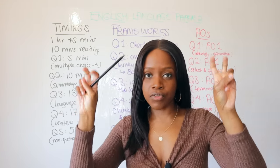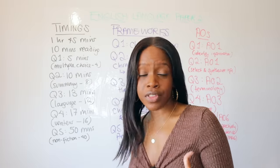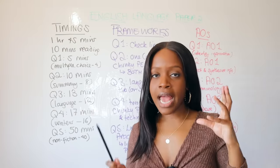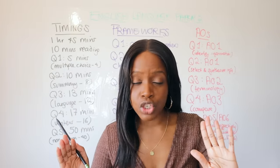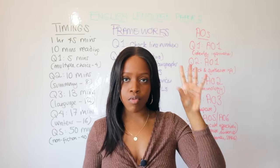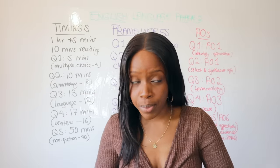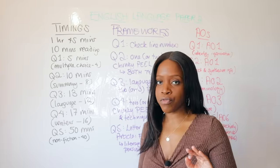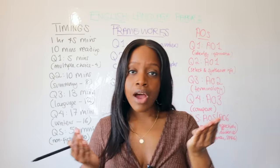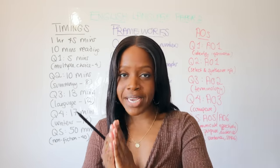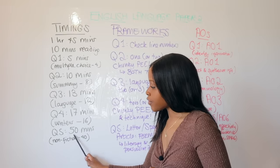Question Four is your second chunky comparison question. It asks you to discuss writer's viewpoints, thoughts, feelings, and perspectives from both extracts. It's worth 16 marks and I'd suggest allocating at least 17 minutes, aiming for two to three comparative paragraphs. In Questions Two and Four you must integrate your analysis of both sources — don't write one paragraph about Source A and then one about Source B. You also need to weave in language and structure techniques when explaining how writers convey their viewpoints.